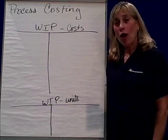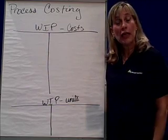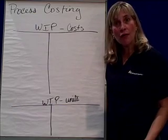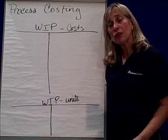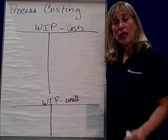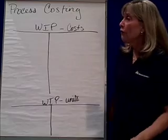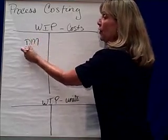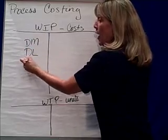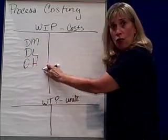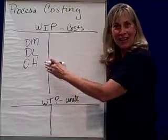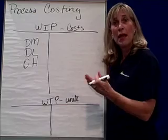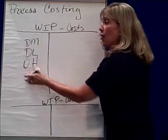Managerial accounting, process costing — we're looking at how much does a product cost. If you're a manager of a production process, you have to track two things to determine how much something costs. You have to track your costs, and those costs include your direct materials, your direct labor, and your overhead. That overhead is applied overhead, determined either by the traditional method or by ABC. So these are our costs.